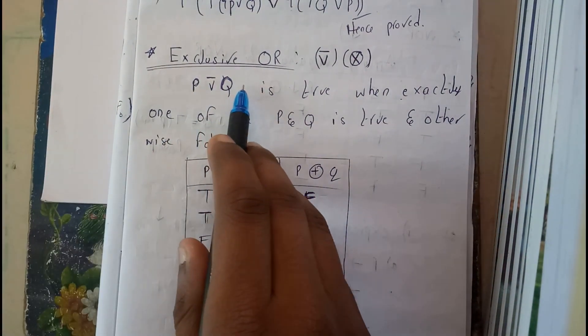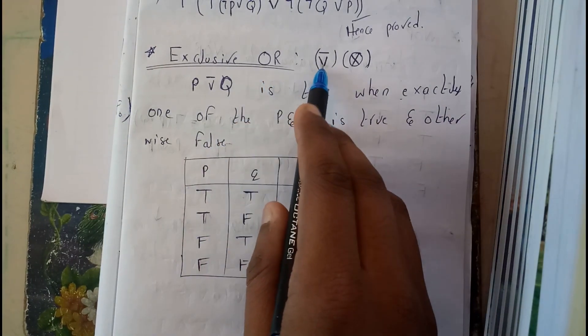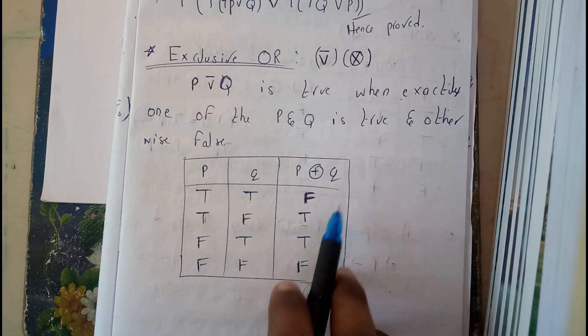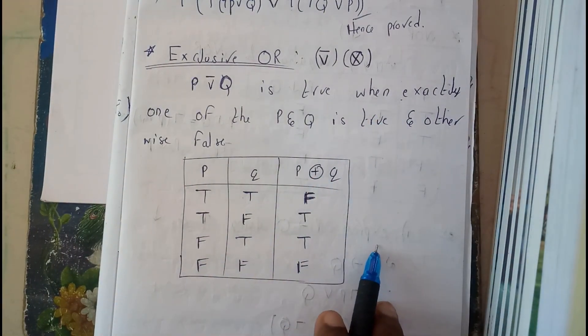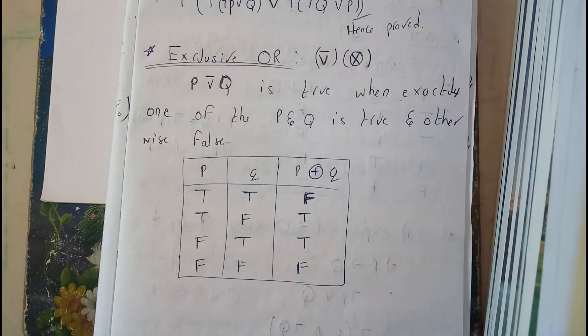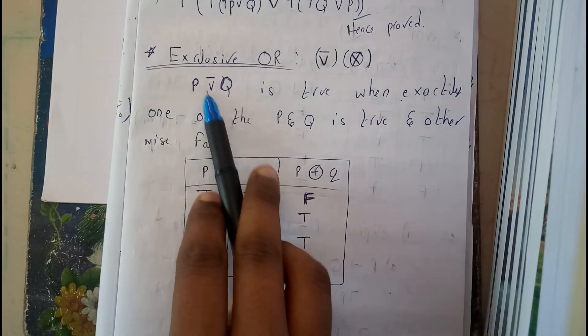We'll be going through exclusive OR. It is denoted by V bar, or negation of OR, which is nothing but exclusive OR. So it is also denoted by cross circle.